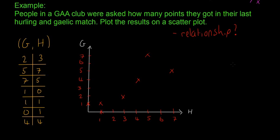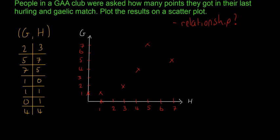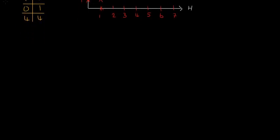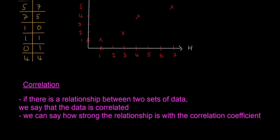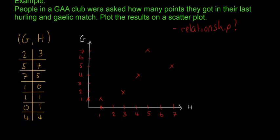Next I'm going to talk about correlation, and correlation just deals with the relationship between data. If there is a relationship between two sets of data we say that the data is correlated. So in this case how many points you score in Gaelic and how many points you score in hurling, there's a relationship there, so it means it's correlated data.